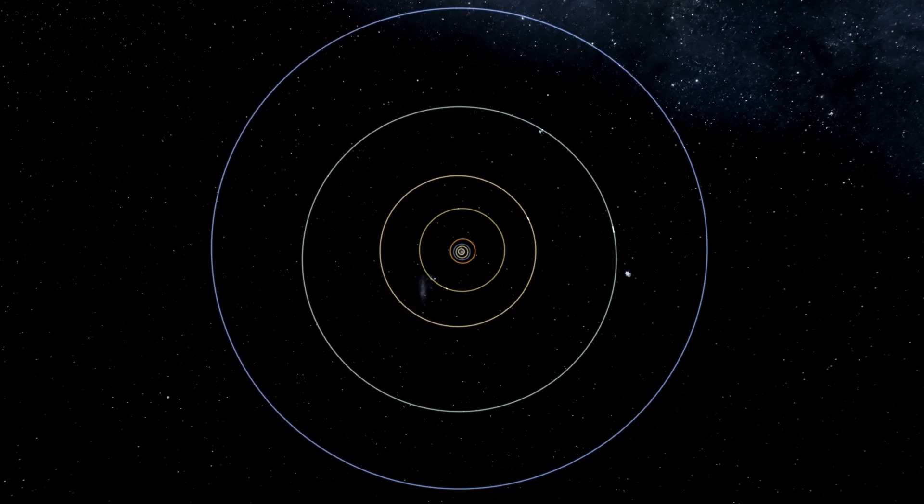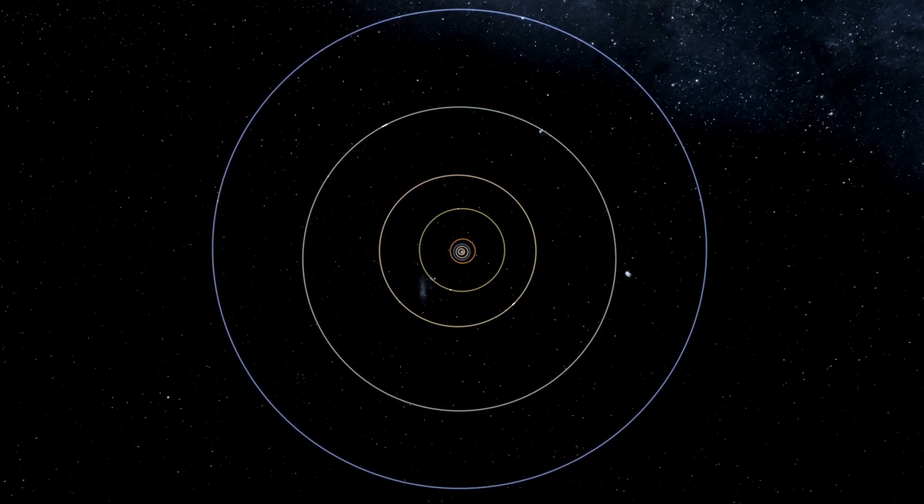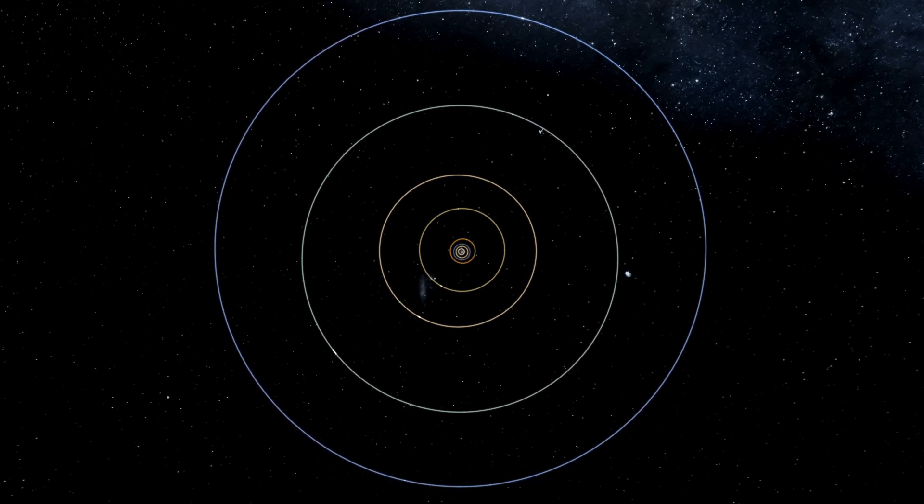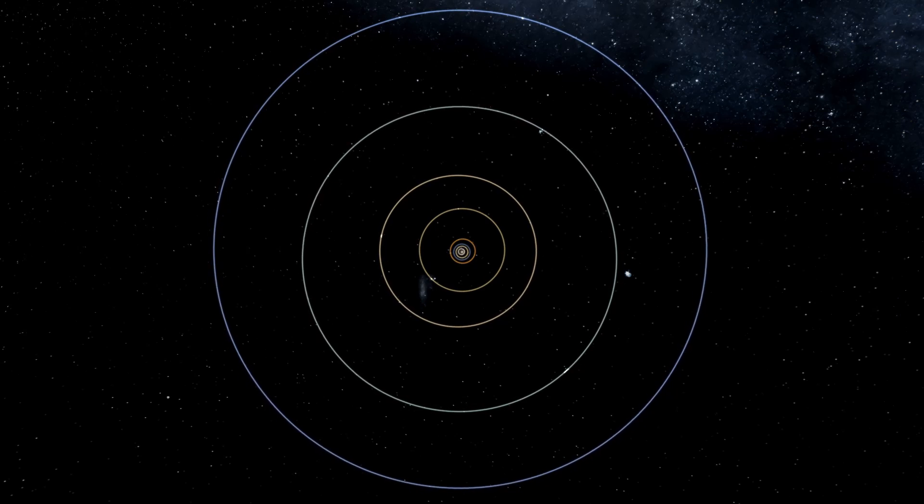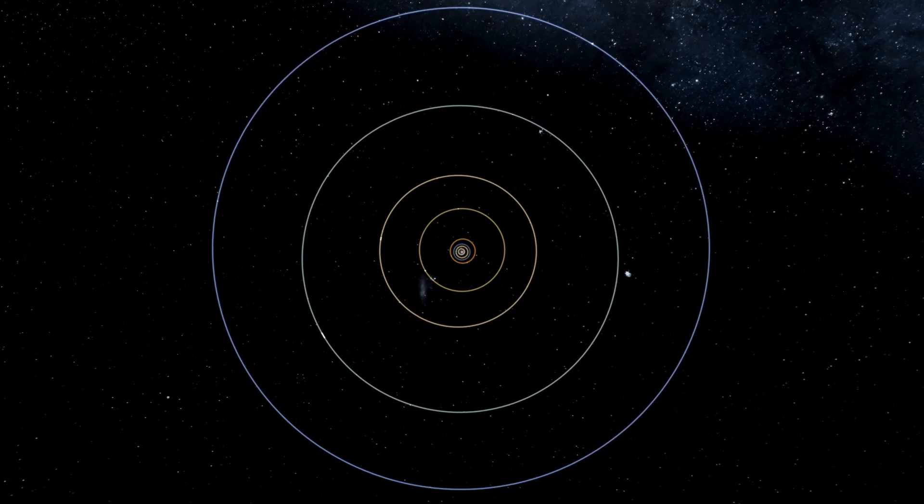Our solar system is one of only billions of other planetary systems in the Milky Way. It is of course centered by the Sun, a G2 main sequence star, and has eight planets orbiting it.